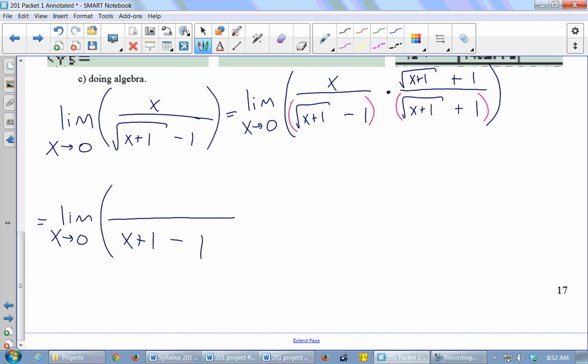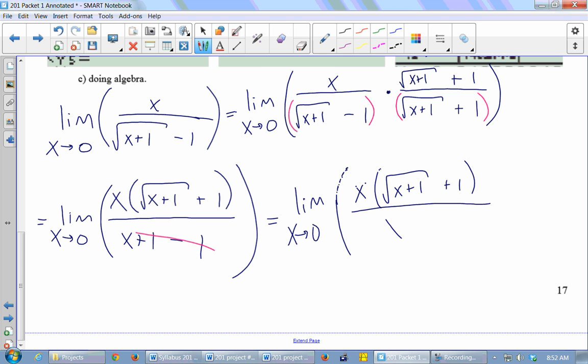And then when I do the numerator, I've got x times radical x plus 1 plus 1. So I just multiplied the tops as well. I didn't FOIL it out on that one. I just left it. So this plus 1, minus 1, those cancel. So I've got the limit as x approaches 0 of x times square root of x plus 1 plus 1 over x. I have an x on the top and an x on the bottom. Cancel.